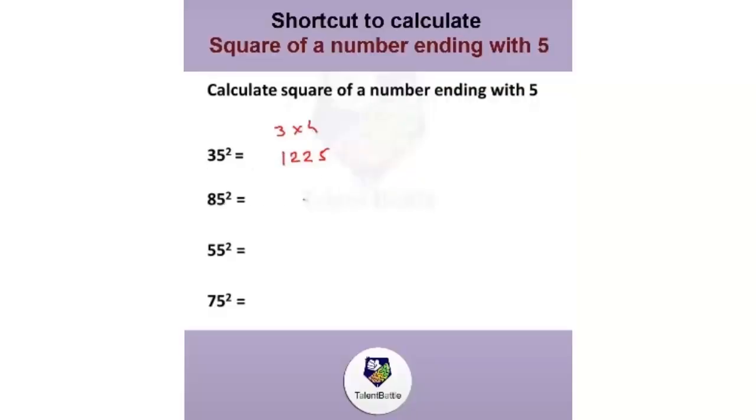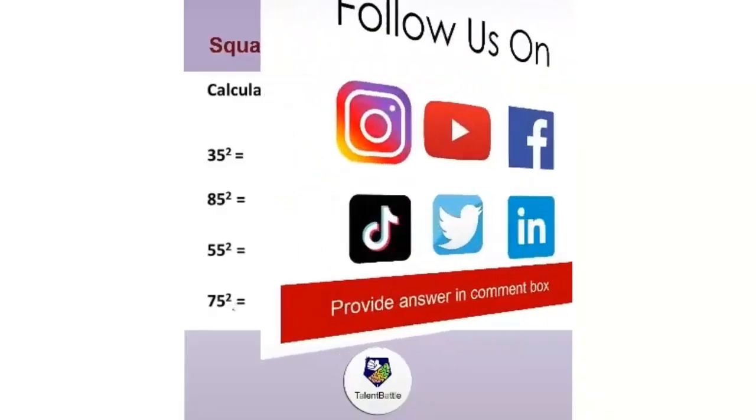Let me take one more example. 85 square. Square of 5 is 25. Then what I will do, 8 into the next digit which is 9. 8 into 9 is 72. So square is 7225. 55 square: 25. And 5 into 6 is 30. Now you need to tell me square of 75 in the comment box. For more such videos do follow talent battles.